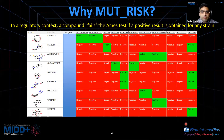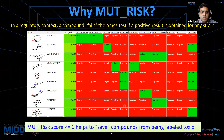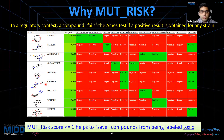Why do we have to focus on MuteRisk? In the regulatory context, the compound fails the Ames test if we have a positive result even in a single strain. So if we apply similar logic in computational toxicology, all these drugs would have failed if any of these strains are called positive. But if we look at the overall MuteRisk with a threshold of one, we can see that all these compounds were saved from being labeled toxic.